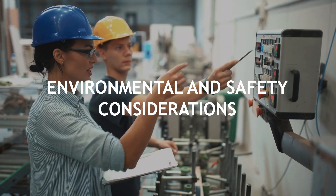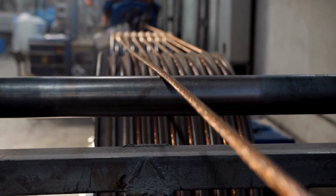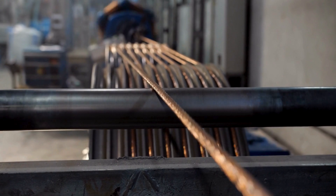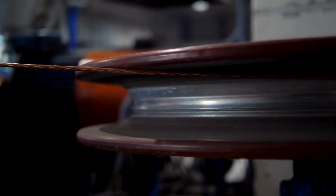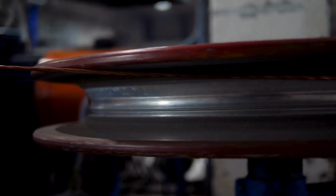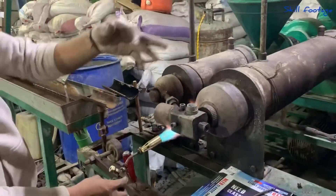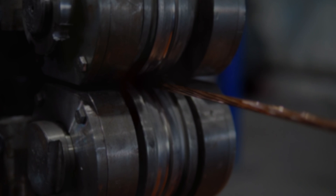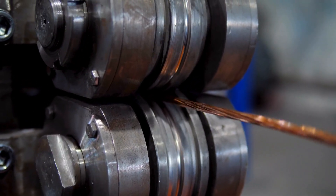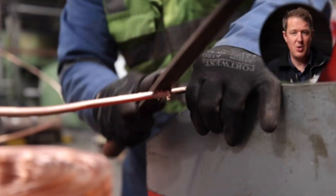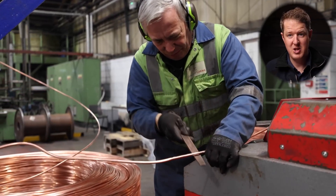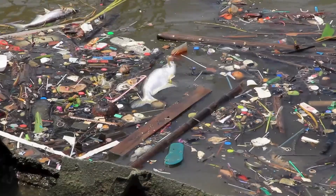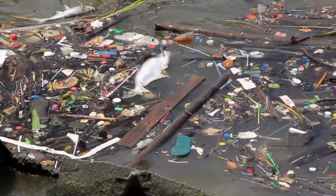Environmental and safety considerations: the manufacturing of electrical cables involves several environmental and safety considerations. Companies must adhere to strict regulations and standards to minimize their environmental impact and ensure the safety of workers and end users. Copper and other materials used in cable manufacturing are valuable and recyclable. Scrap copper from the production process is collected and recycled, reducing the need for new raw materials. Waste management practices are also implemented to handle other by-products and waste materials responsibly.